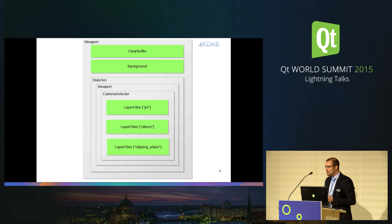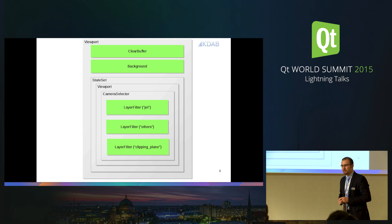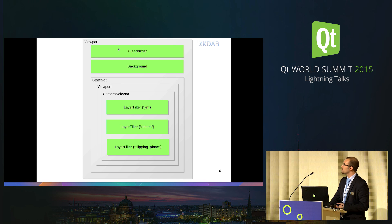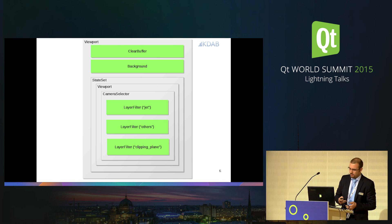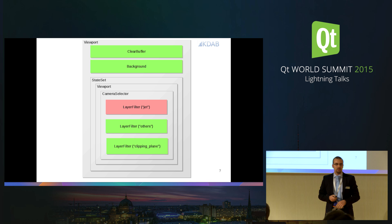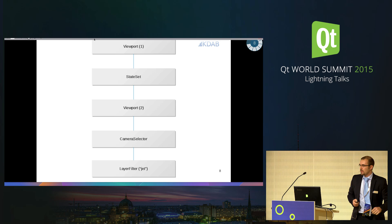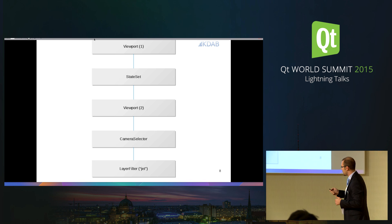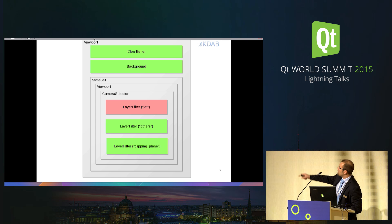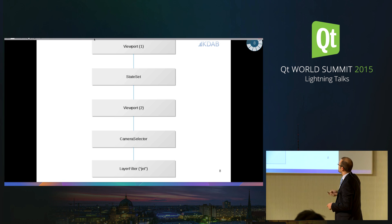How does that work? It works by creating a subtree and looking for the leaf nodes — the leaf nodes are shown in green. They are traversed from the leaf node to the root, and we build what we call render views. Let's focus on the layer filter with the jet leaf node. That creates a viewport, a state set, a viewport camera selector, and a layer filter. All the states and elements defined above are taken into account for this render view.